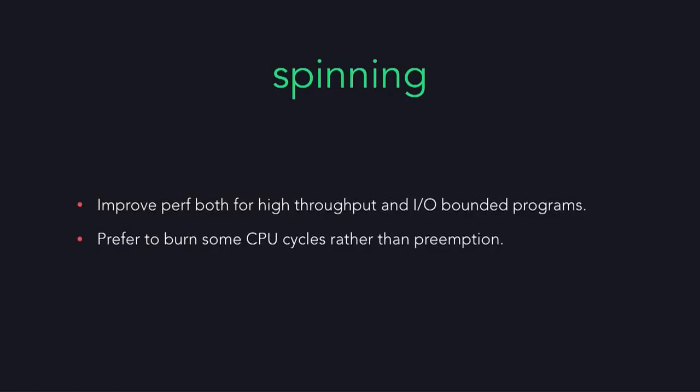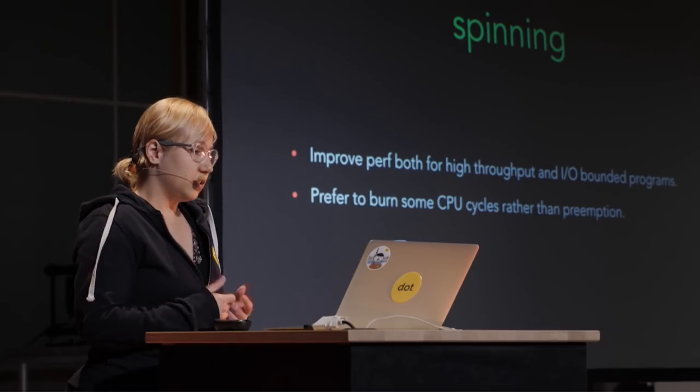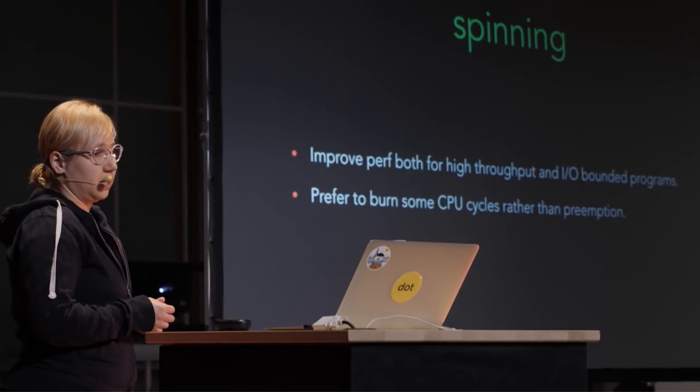We still need to address the overwhelming amount of context switches. Constant preemption is expensive and is a problem for high-throughput programs where performance is critical. OS threads shouldn't frequently hand off runnable Go routines between each other. Also, in the presence of I/O, OS threads are constantly blocked and unblocked, which is costly and adds a lot of overhead. This is why threads created by the Go runtime do a little bit of spinning — they do a little bit of work so they are not immediately preempted. We leverage the idea that it's worth burning a few CPU cycles rather than letting the OS thread get preempted and waiting for another to become runnable.